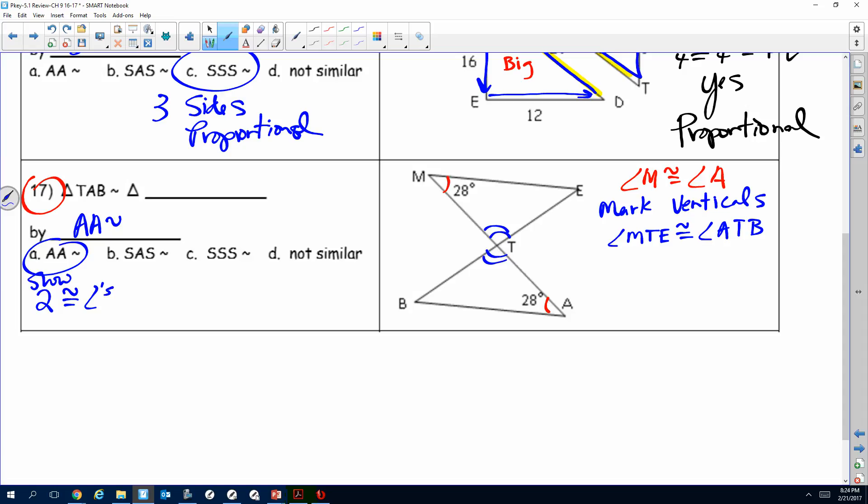Now we just got to complete the similarity statement. If I'm going from T-A-B, so I go from T to this 28 to B, I got to start with the T again, so that would be T-M-E. Remember order matters. Make sure you match up the degrees and the angles. That takes care of 17.